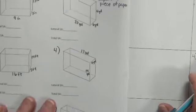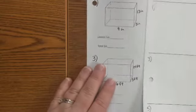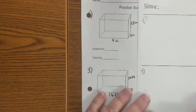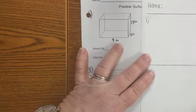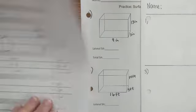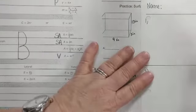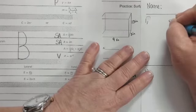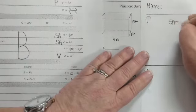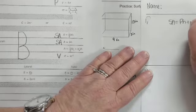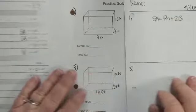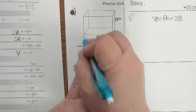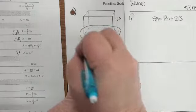I am going to do one problem today, just to kind of remind you about what the steps are. Okay, so step one: write the formula down. So I'm going to come over here and I am going to write SA is equal to PH plus 2B.